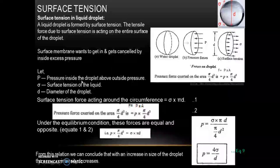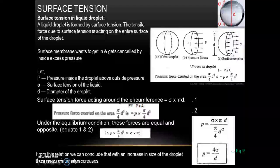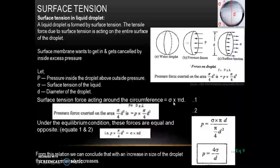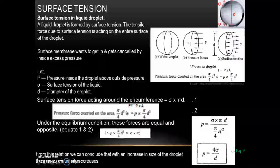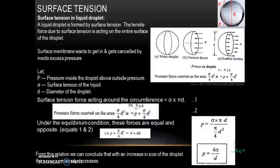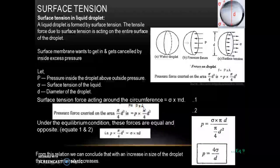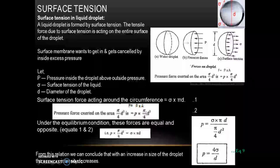The surface membrane of the droplet wants to contract, but it is balanced by inside excess pressure P, where P equals pressure inside the droplet above outside pressure. Sigma is the surface tension of the liquid and D is the diameter of the droplet. Surface tension force acting around the circumference equals sigma into pi·D (equation 1). The pressure force F equals P into A, which is P into (pi/4)·D² (equation 2).